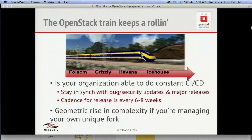The OpenStack train just keeps rolling — release after release after release — not just major releases but also maintenance releases, bug fixes, and security fixes. Is your organization set up to do CI/CD — continuous integration, continuous deployment? Do you want to draw down from trunk every time it's available? Can you keep up with the six- to eight-week release process, test the code, and get it deployed every single time? If you have your own unique extensions to your environment, it becomes geometric in terms of the time required — you have to pull from trunk, add your fixes, and retest everything to make sure your fixes work and you haven't broken anything in the community.